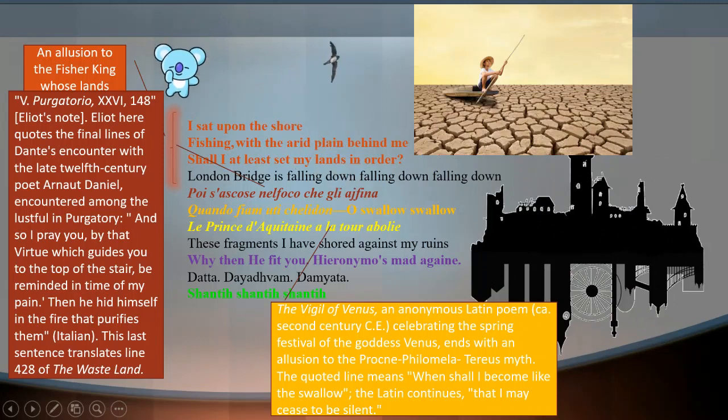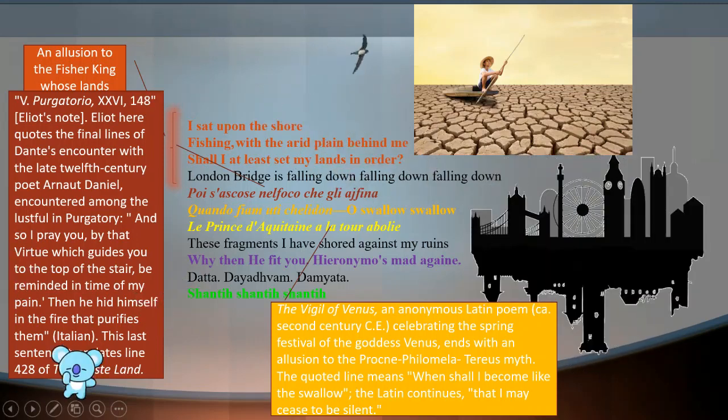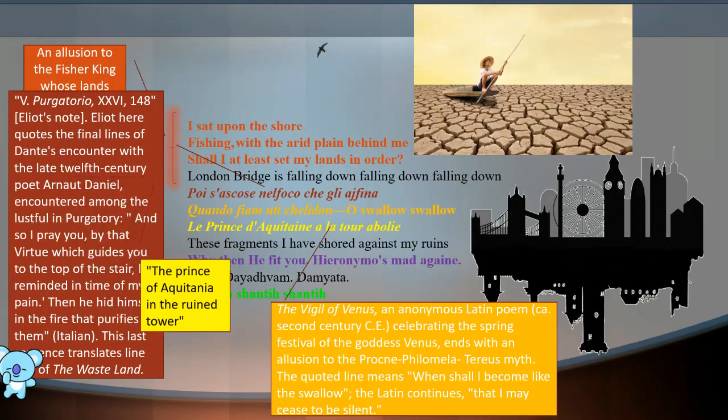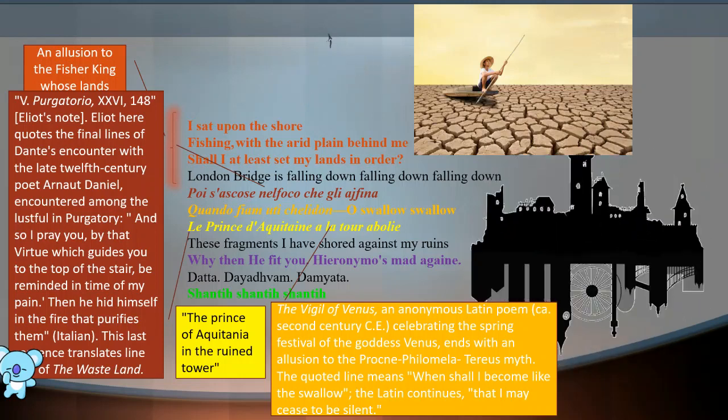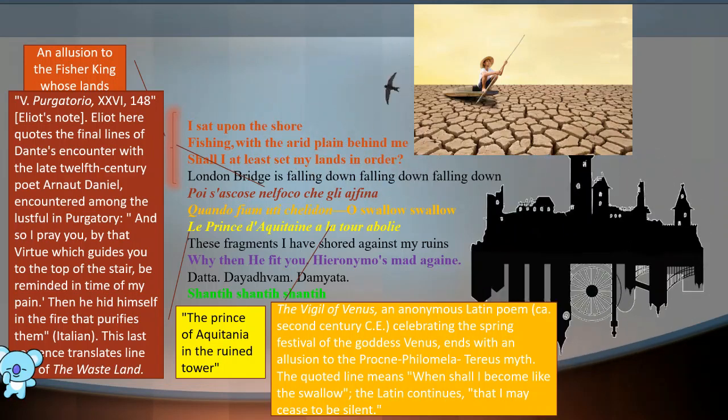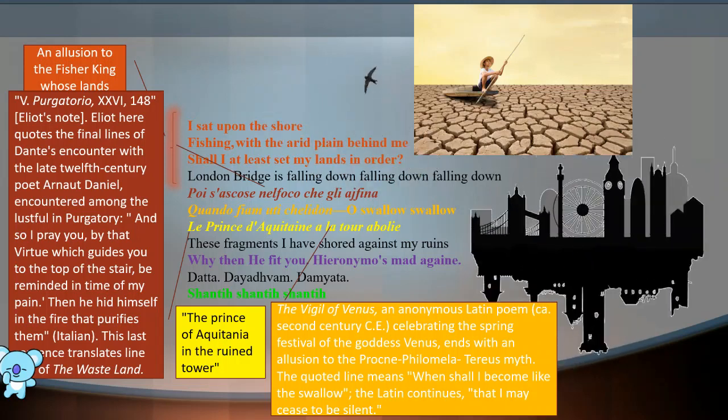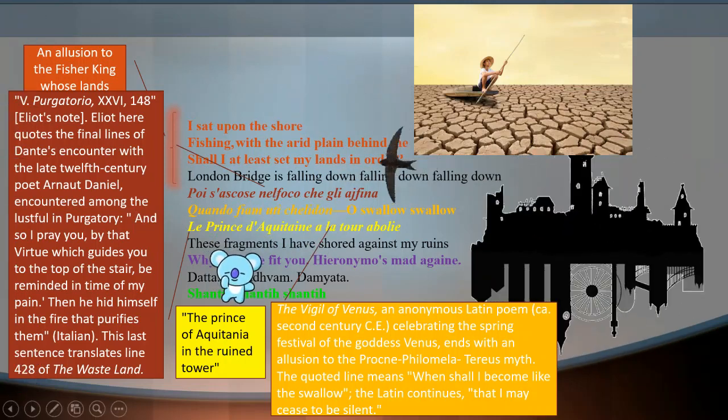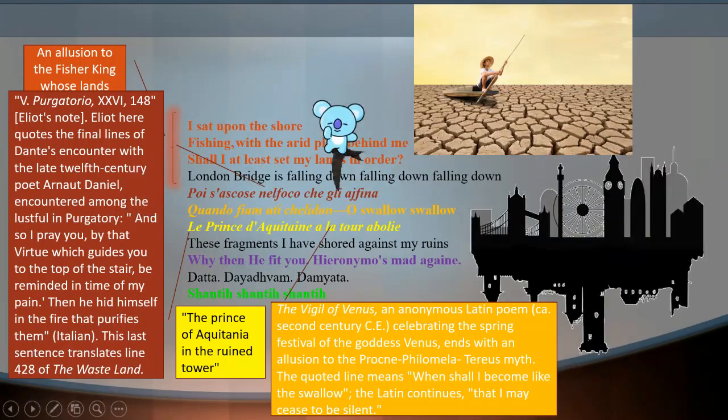The French line Le Prince d'Aquitaine à la tour abolie translates as the prince of Aquitaine in the ruined tower—ruined towers in other places in the poem—and the prisoners of the mind. This part is taken from one of the works of Gérard de Nerval, the French writer, and he's using it to remind us of some of the other themes. These fragments I have shored against my ruins. So Eliot here confesses the poem is full of fragments and now he has some reminders for those fragments.